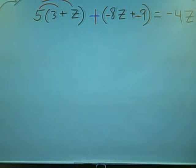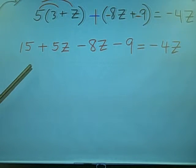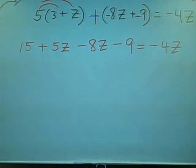Now you distribute the 5 and combine like terms. So this would be 5 times 3, that's 15, plus 5 times z, that's 5z. Then you have to put a minus 8z and minus 9, equals negative 4z. You're gonna combine the z's and combine these two.